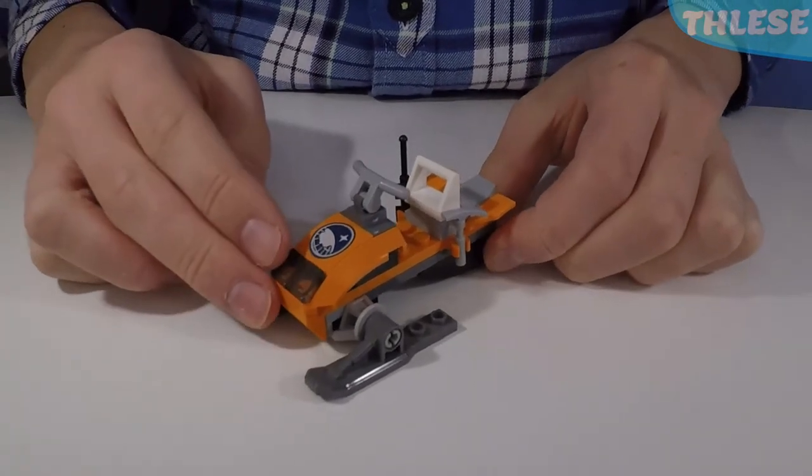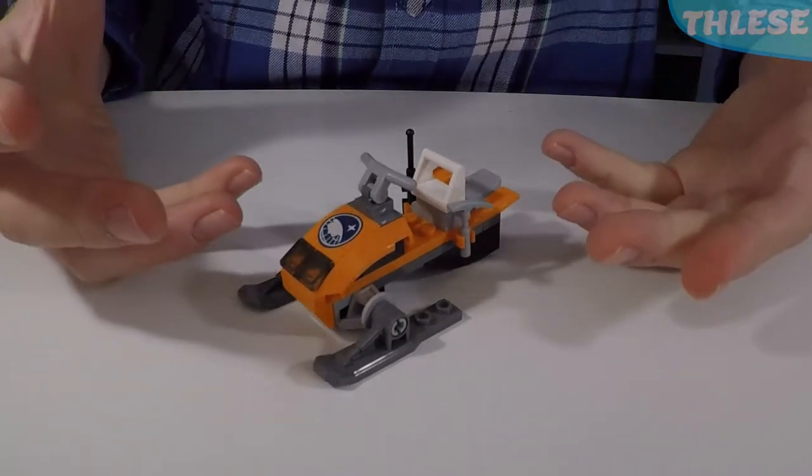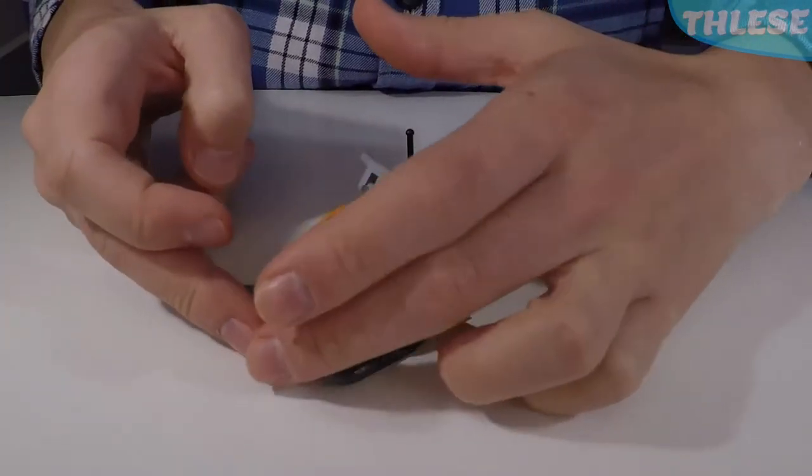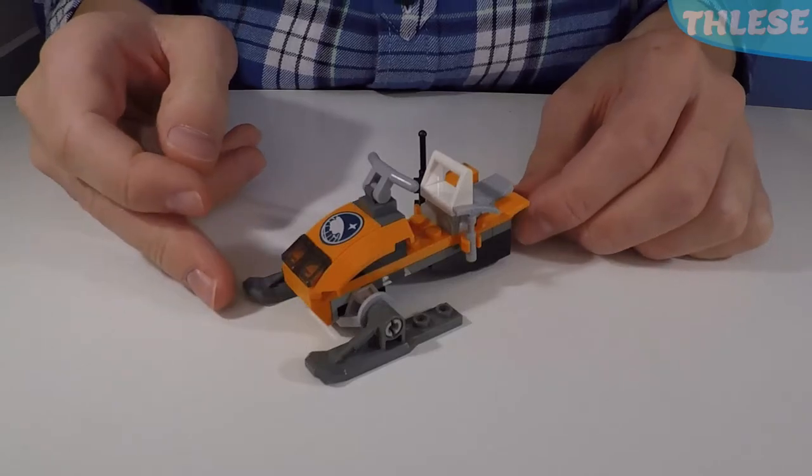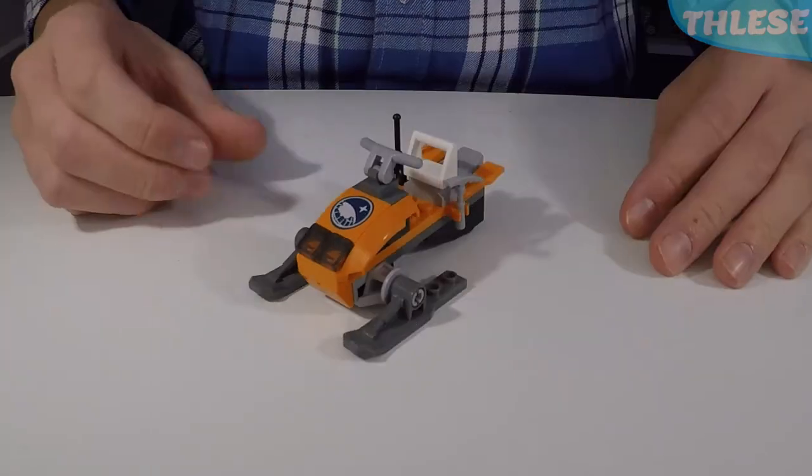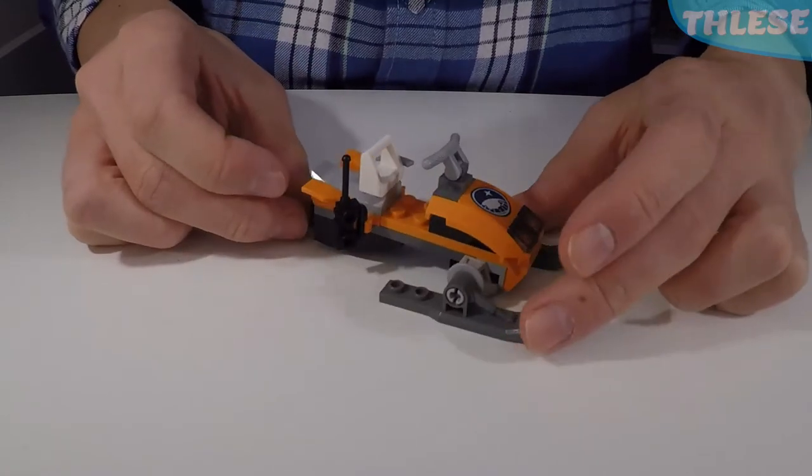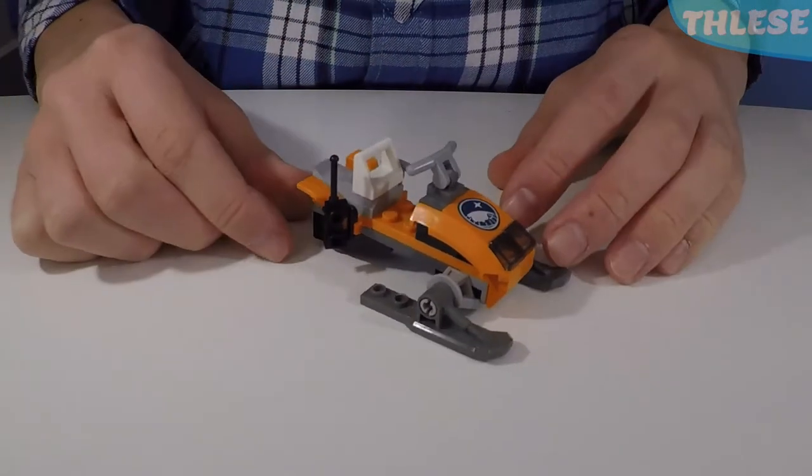So this set comes with this Arctic snowmobile. This snowmobile is fairly small, only reaching 5cm at its widest and 9cm for the body in length. It's mainly orange with some black and grey going in there and it has one seat up here.